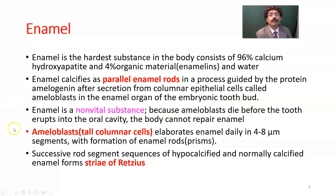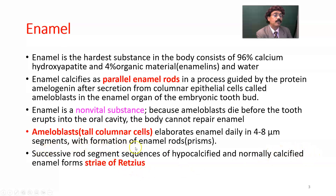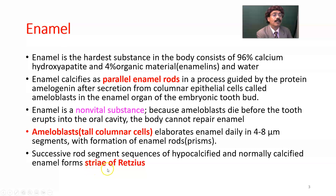Enamel is a non-vital substance because ameloblasts die before the tooth erupts into the oral cavity. The body cannot repair enamel. Ameloblasts, or columnar cells, elaborate enamel daily in 4 to 8 micrometer segments, with formation of enamel rods that are prismatic in shape. Successive rod segment sequences of hypocalcified and normally calcified enamel form the striae of Retzius.